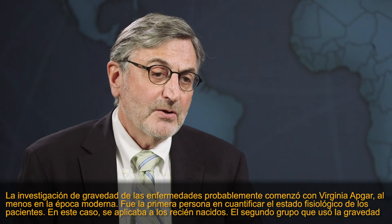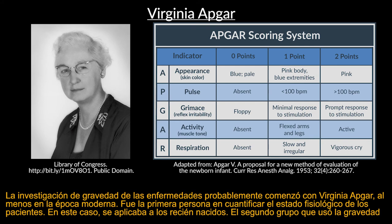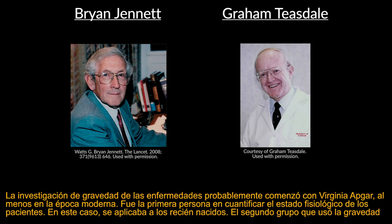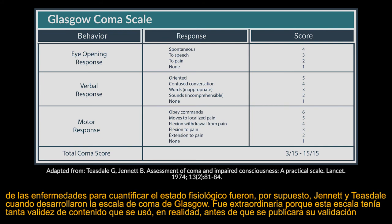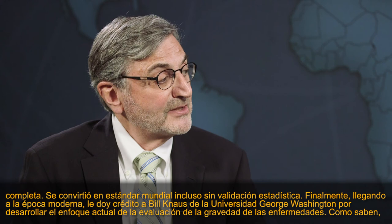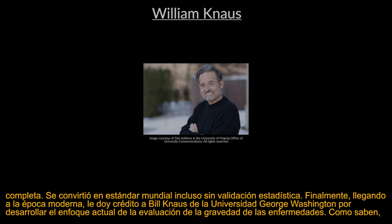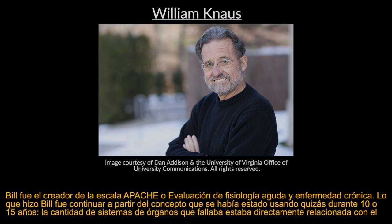Severity of illness research probably started with Virginia APGAR, at least in the modern era. She was the first person to quantify physiologic status for patients — in this case, newborns. The second group to use severity of illness for quantifying physiologic status was Jeanette and Teasdale when they developed the Glasgow Coma Scale. That score had so much content validity that it was actually used before its full validation had been published. It became a worldwide standard even without statistical validation.